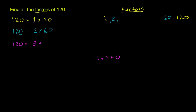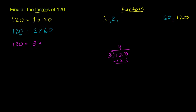To find what you multiply 3 by to get 120: 3 goes into 12 four times, 4 times 3 is 12, subtract, bring down the 0, 3 goes into 0 zero times, nothing left over. So it goes into it 40 times. You can think of it as 120 being 12 times 10 — 12 divided by 3 is 4, so 120 divided by 3 is 40. So we have two more factors: 3 at the low end and 40 at the high end.